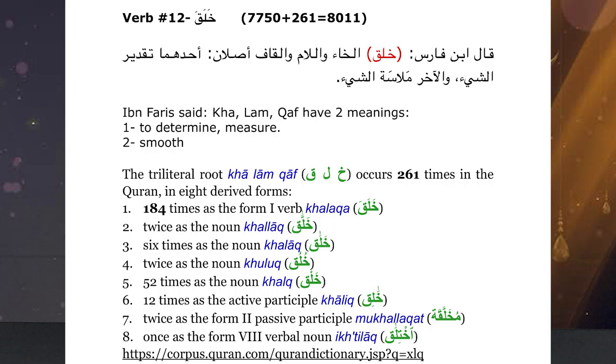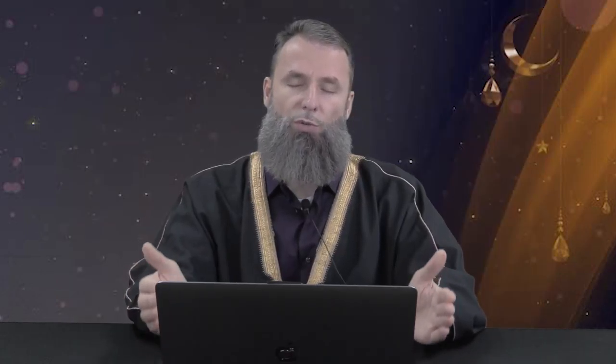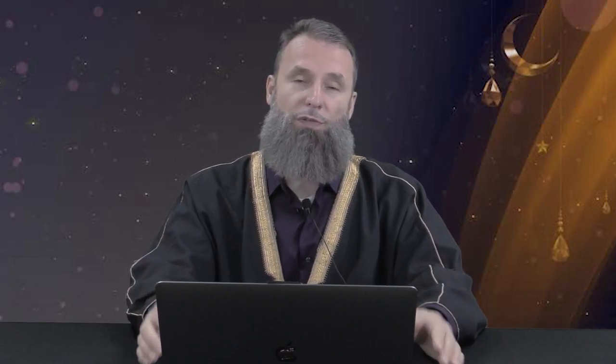Alhamdulillah, the rest of them are much less in quantity. Anytime we come across anything that has these root letters, such as khaliq — khaliq is the creator, the agent himself, subhanah. All the other derivatives talk about Allahu Azzawajal being the one who measures, who determines, and then decrees for whatever part of his creation he wills to create, subhanah. And he is the most beautiful of creators.